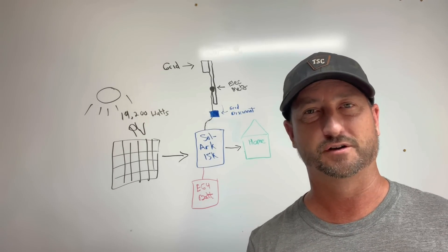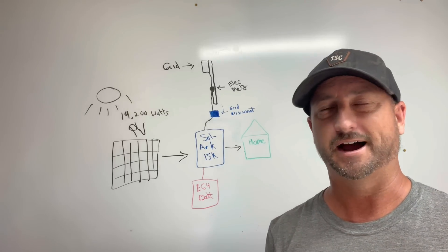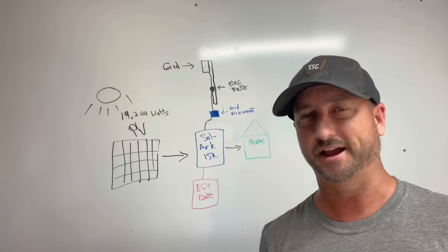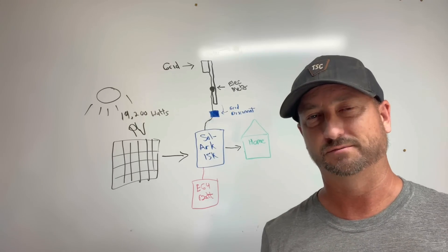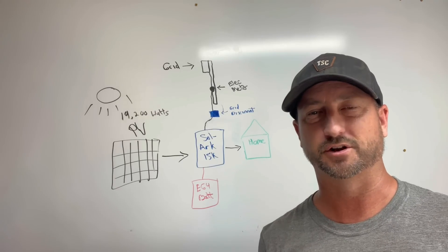So when it comes to customer service Solark takes the edge there. So going back to the initial question, if I had to do it all over again would I pick the 18k PV inverter from EG4? I don't know, coin flip. That inverter wasn't even available when I installed my system. It hadn't even been released yet. So for you I think you'll be happy with either one. And I'll leave a link in the description also to the EG4 18k PV.